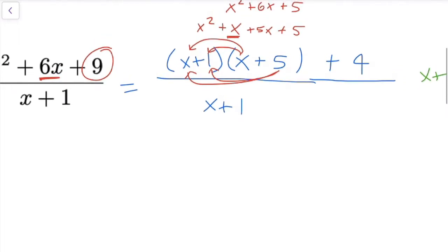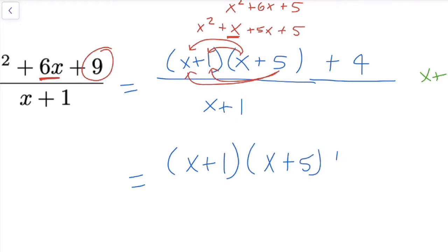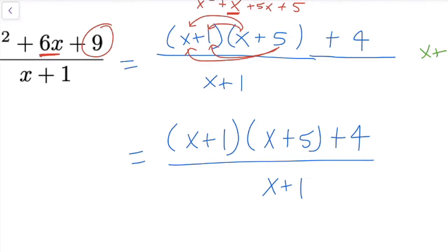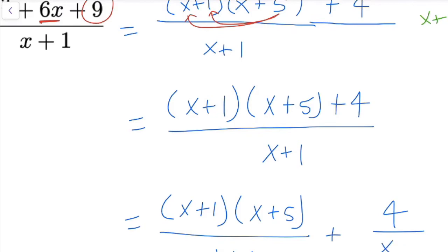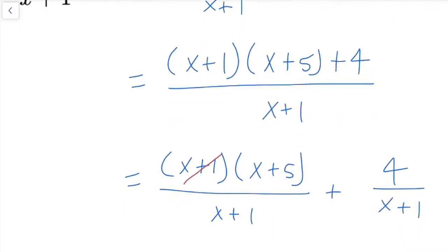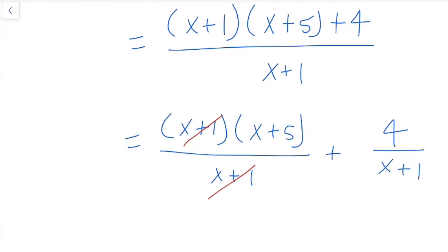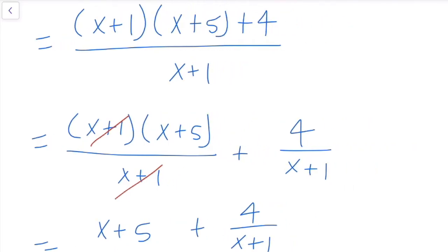The whole numerator is equal to x plus 1 times x plus 5, plus 4. I've forced this expression in the numerator to have a factor of x plus 1. Now I can split this up: x plus 1 times x plus 5 divided by x plus 1, plus 4 over x plus 1. That lets me cancel those two factors, giving x plus 5 plus 4 over x plus 1, where x is not equal to negative 1 — we have to take the domain into account.